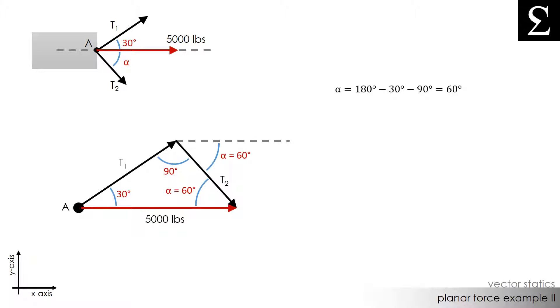Now that the angle alpha has changed, the tension forces in T1 and T2 are going to change. We can use simple trigonometry to calculate these new tension forces. Since this triangle that we drew is really a right triangle, we can use simple trigonometry to calculate T1 and T2. The tension in T1 would be 5,000 times the sine of 60 degrees, which is 4,330 pounds. And the tension in T2 would be 5,000 times the cosine of 60 degrees, which is 2,500 pounds.